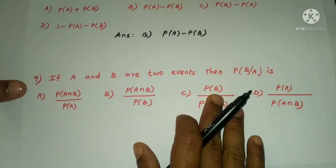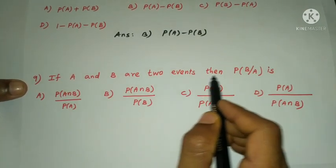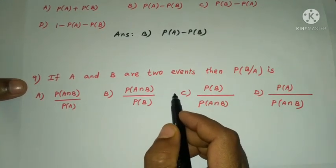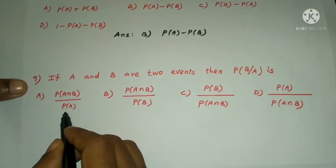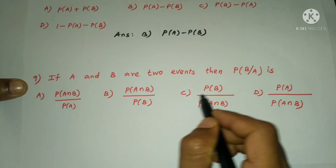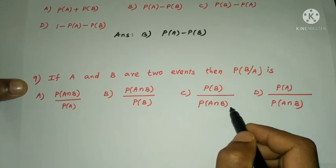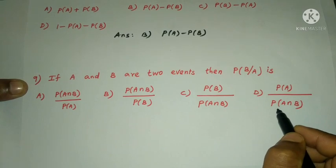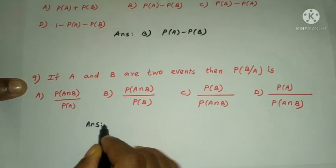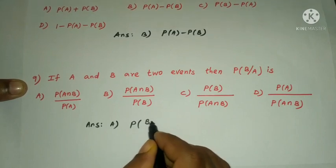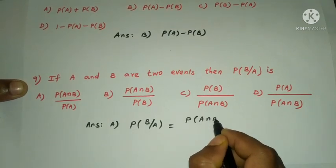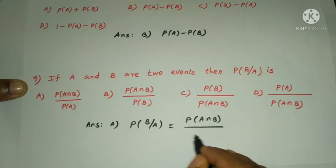Next question: if A and B are two events, then P(B|A) — conditional probability formula. Option A: P(A∩B)/P(A). Option B: P(A∩B)/P(B). Option C: P(B)/P(A∩B). Option D: P(A)/P(A∩B). The answer is option A: P(B|A) = P(A∩B)/P(A).